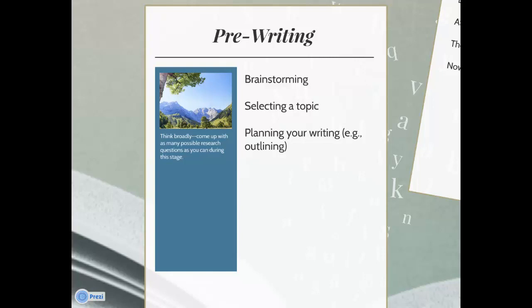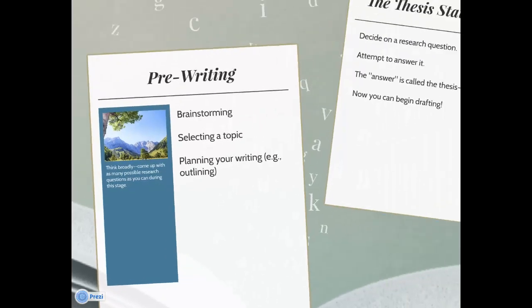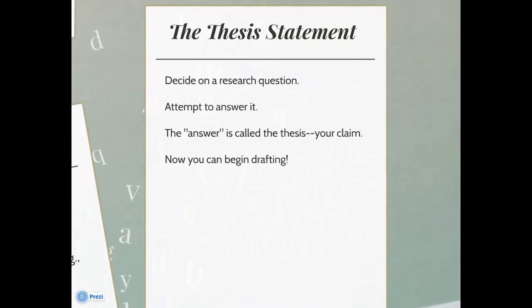Try to come up with as many possible research questions as you can. Once you have settled on a topic and a research question, you will attempt to answer the question. This answer is called the thesis — it is your claim about the topic. Now you can begin drafting.